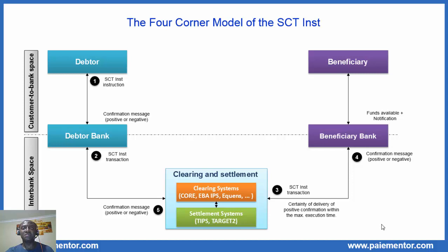In step 5, the CSM forwards the confirmation message received from the beneficiary bank to the originator bank. Before that, the CSM checks that the confirmation was received within the maximum execution time. Note that the confirmation can be positive or negative as mentioned before, and here we assume that everything is okay.